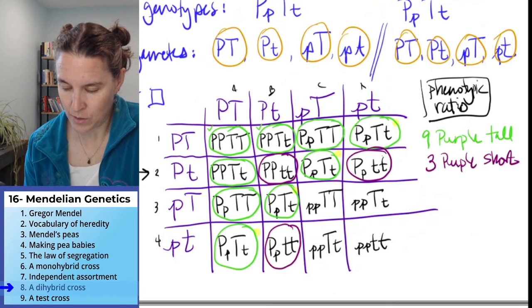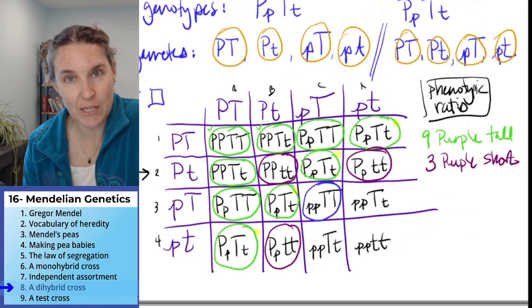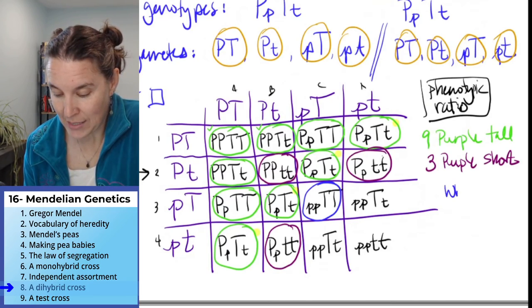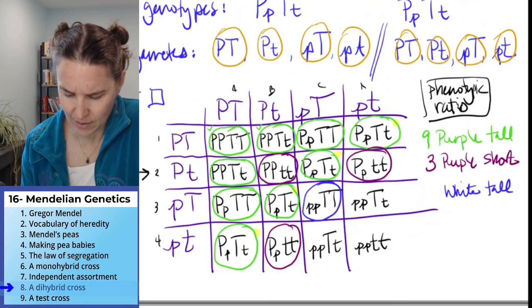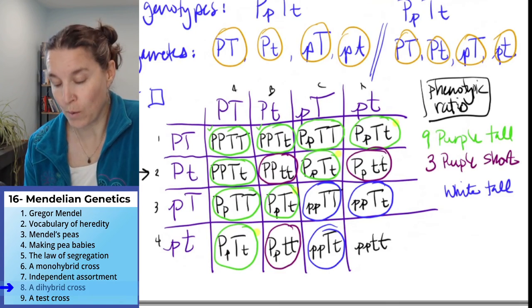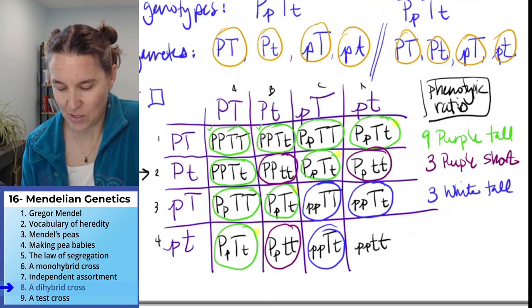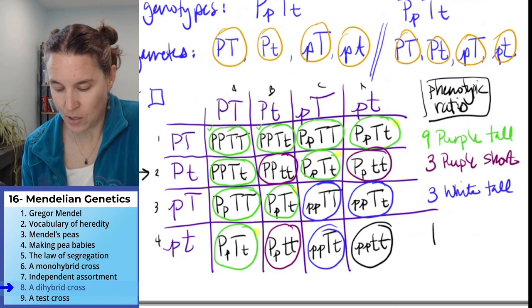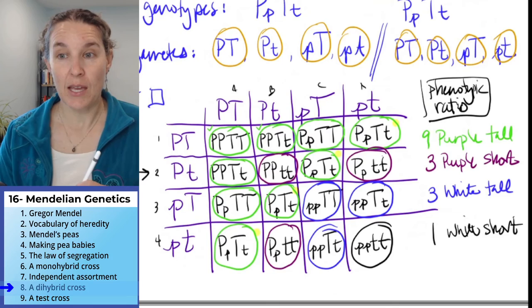I'm just going to pick another one now. What's that guy's phenotype? Little p, little p, big T, big T. That is a white tall guy. The tall white guy, here's another tall white guy, and here's another tall white guy. How many total? And then the story is over. We've got one more. And who is that? White short. The white shorty is our last one.